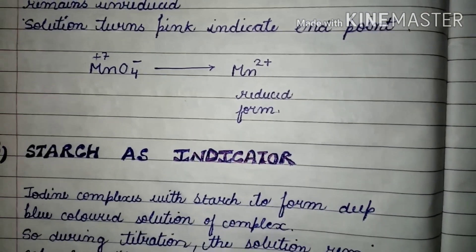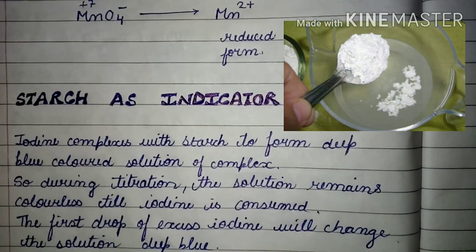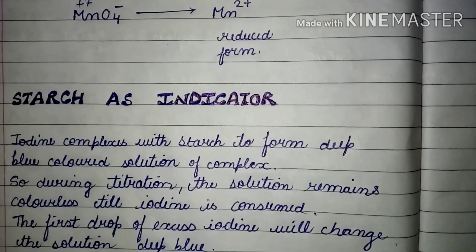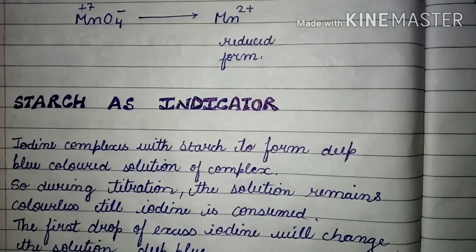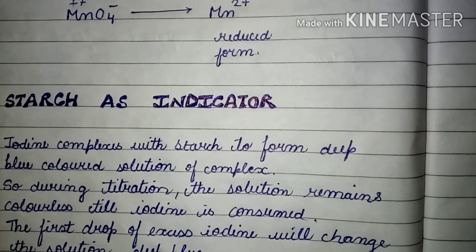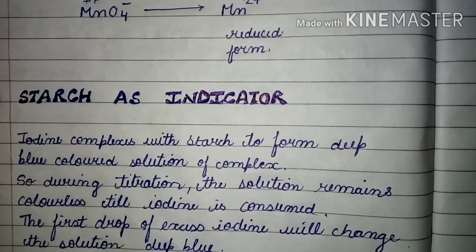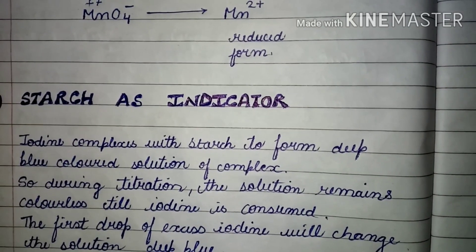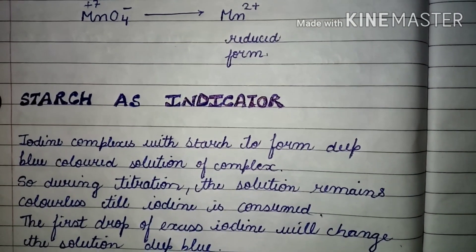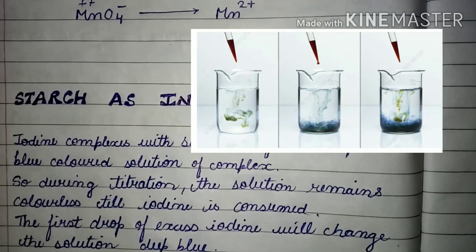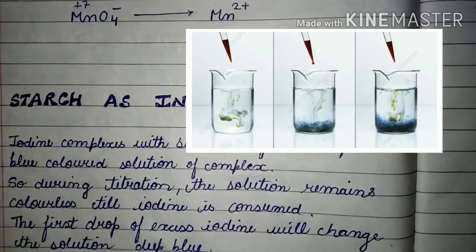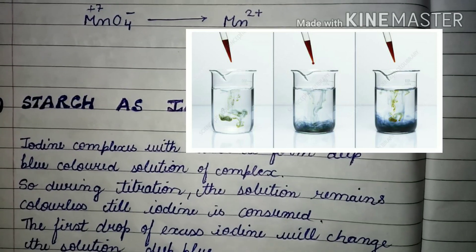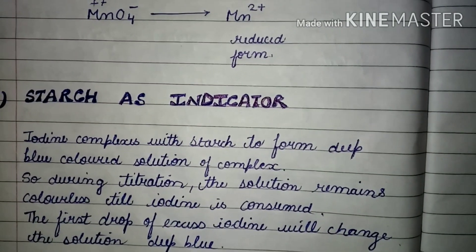The third type of indicator is starch. We used to have an experiment in school to detect starch in a leaf, for which we used iodine solution — it gives the leaf a blue-black color. Similarly here, starch acts as an indicator: the iodine complex reacts with starch to give a deep blue color complex.